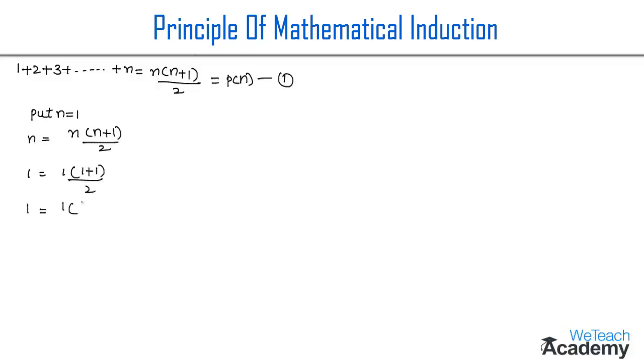That implies 1 equals 1 plus 1 is 2 divided by 2. We can cancel 2 and 2 in the numerator and denominator, and we get 1 equals 1. Therefore, LHS equals RHS, and therefore P(1) is true.